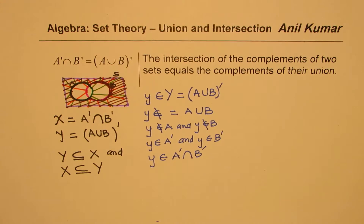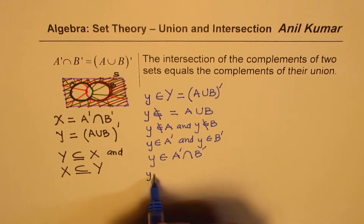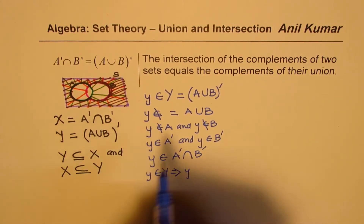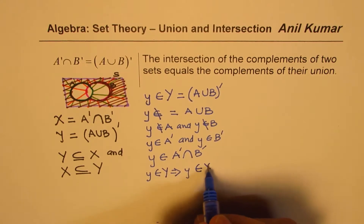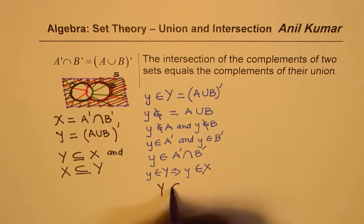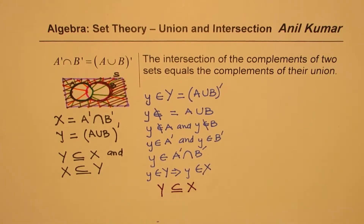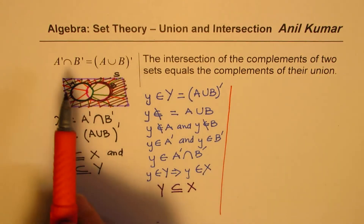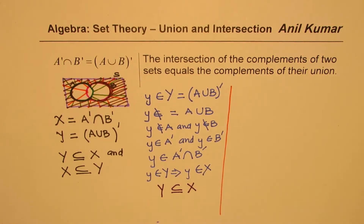Now since Y belongs to the complement of A and also belongs to the complement of B, that means Y belongs to the intersection of these two complements — it belongs to both of them. So every element Y that belongs to the set Y also belongs to the set X. That is one half of the proof — we have shown Y is a subset of X.